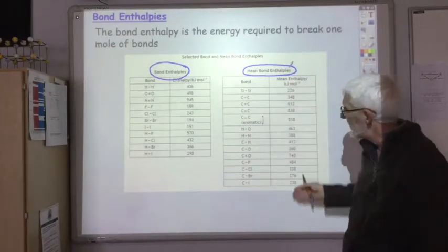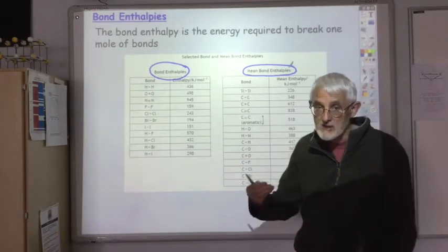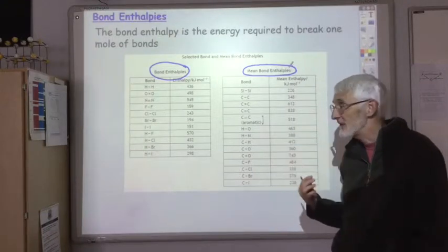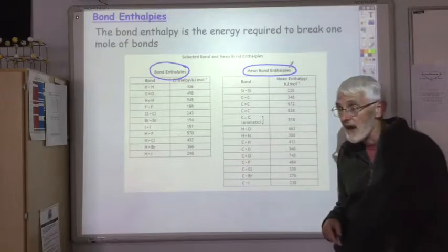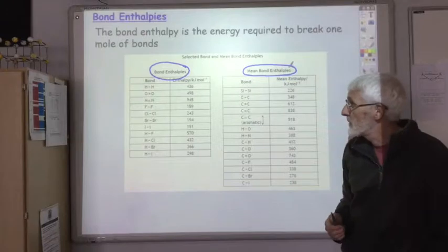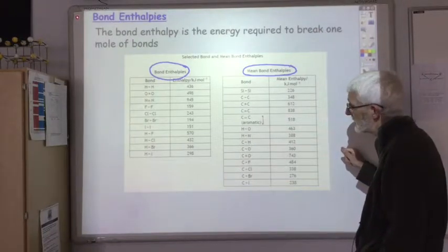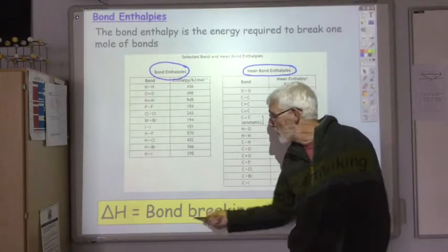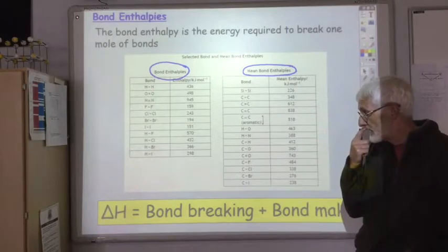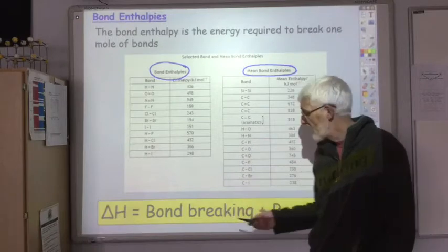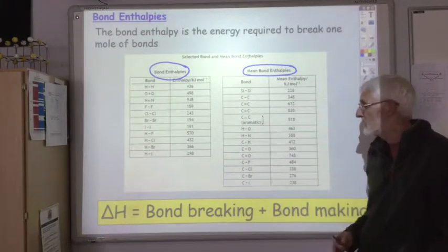These values are all for breaking bonds, so they are all endothermic and all positive, although the positive sign isn't shown, because you have to put energy in to break bonds. If we change to a negative sign, it tells us the energy given out when a bond is formed — so when one mole of H-H bonds are formed, minus 436 kJ/mol of energy is produced. Using Hess's law, the enthalpy change equals the sum of all bonds broken plus the sum of all bonds made. Bond breaking values are all positive; bond making values are all negative.